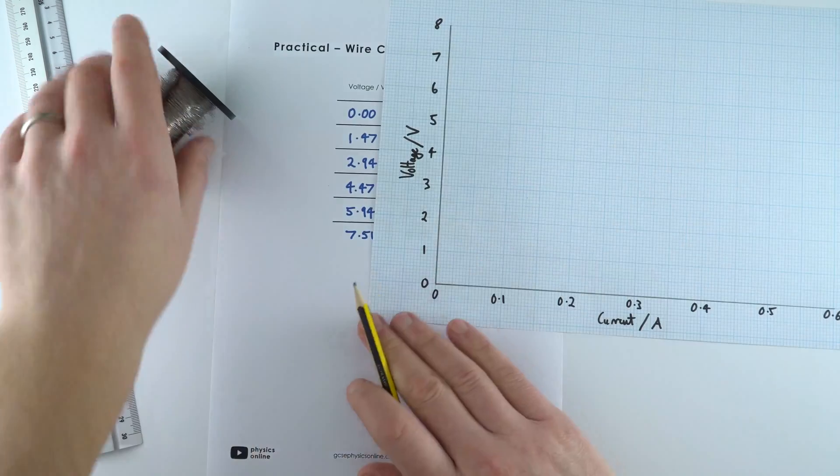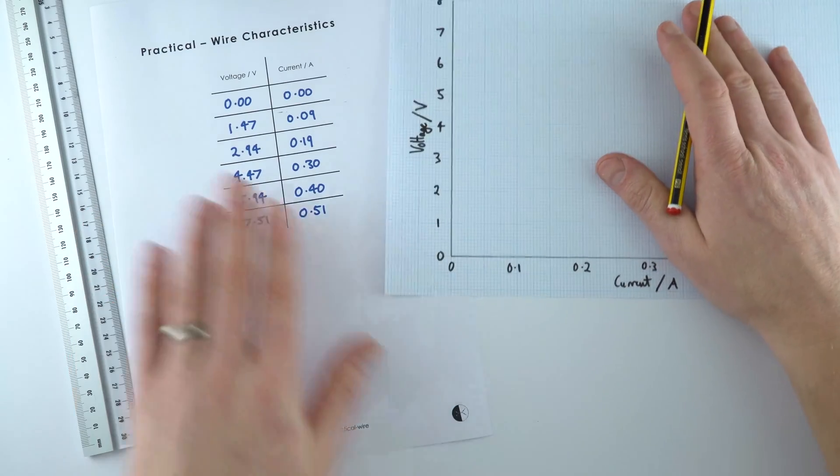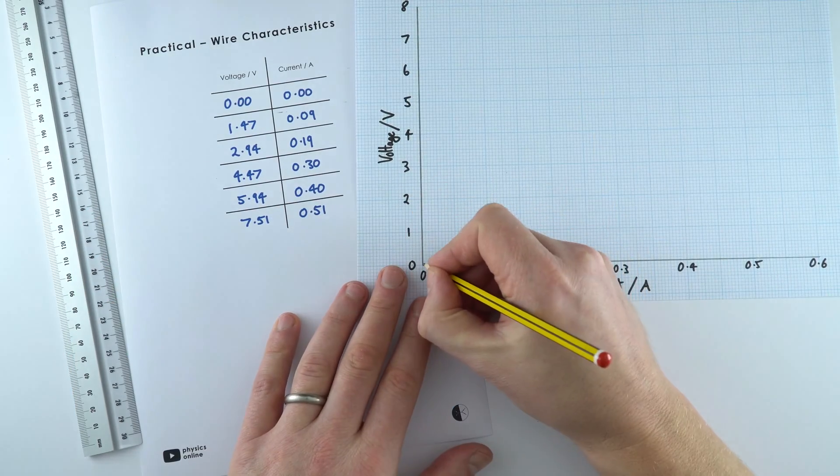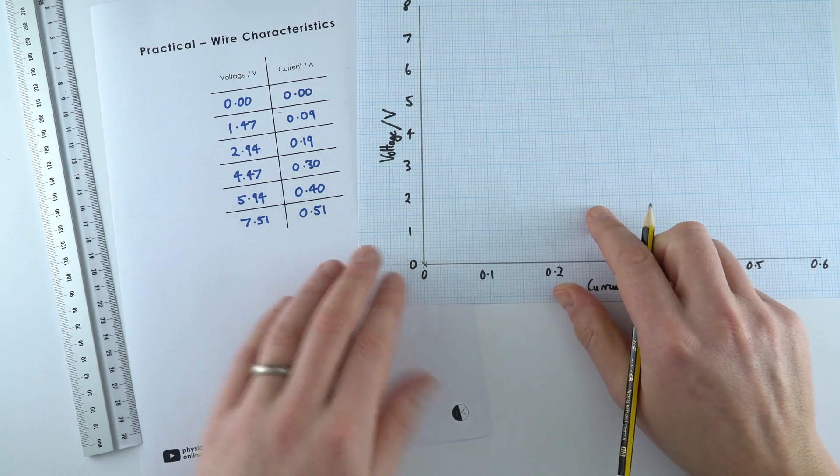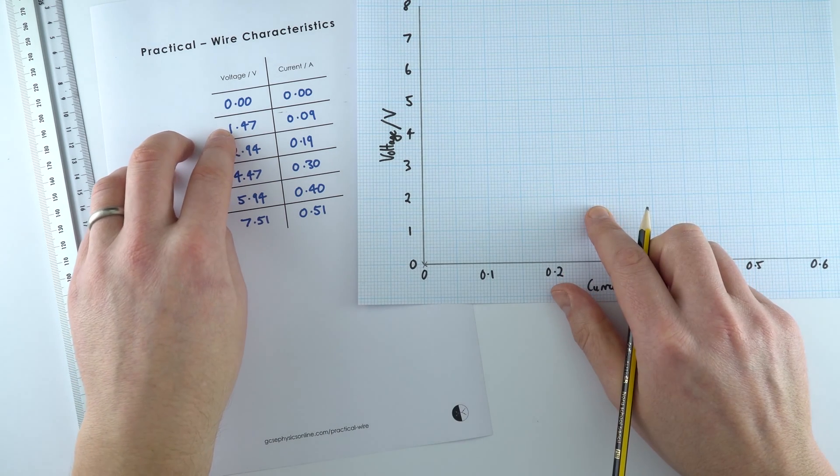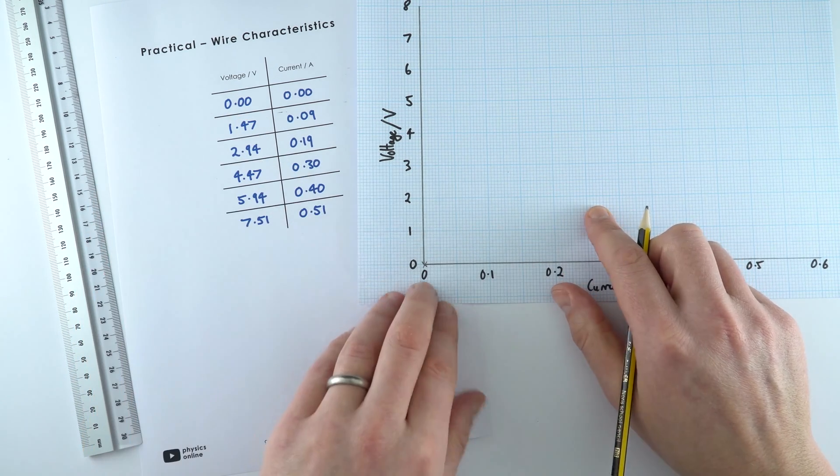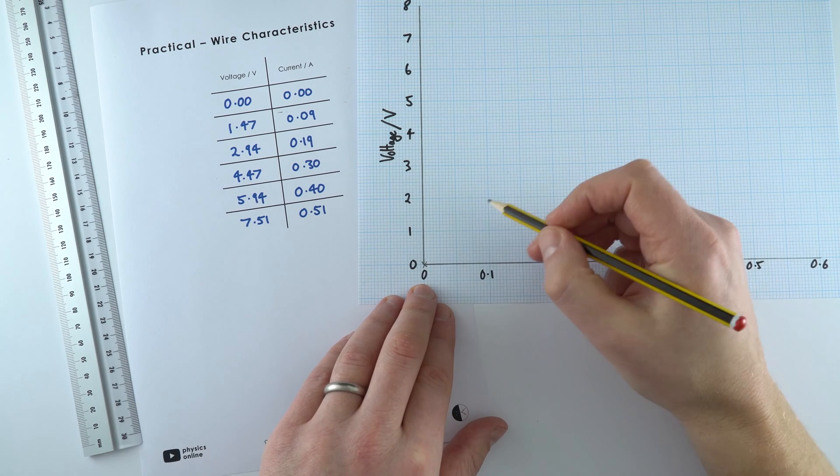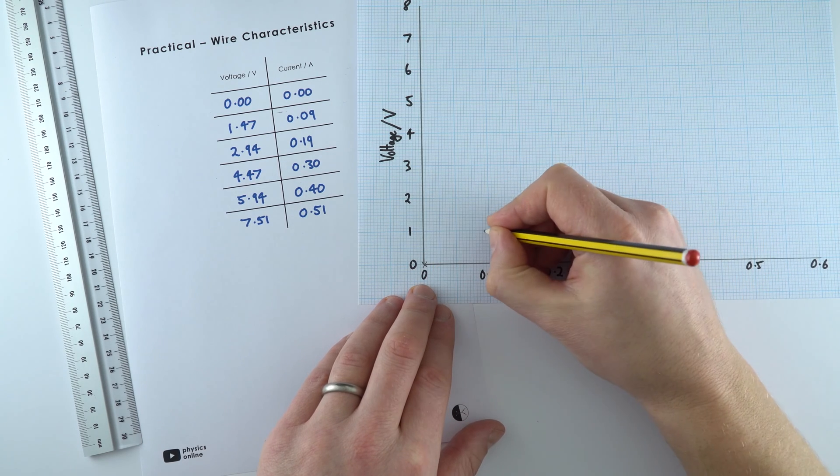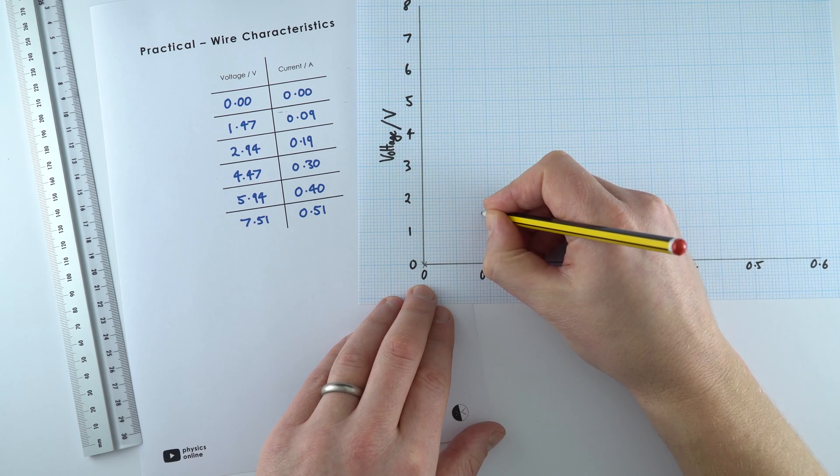So what I can now do is actually plot this data. Now the first point is at 0,0 down here. When we had a voltage of 1.47, that's going to be about here, 1.5, and we had 0.09. So that's going to be here on the graph.